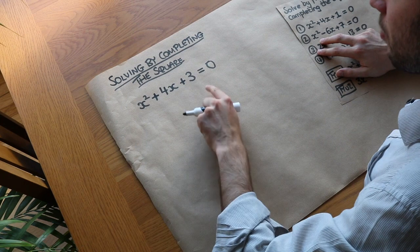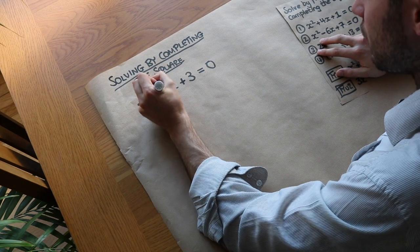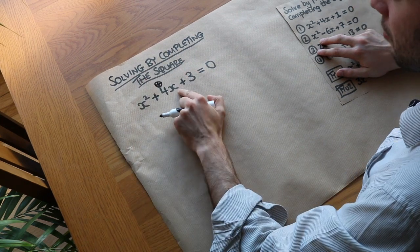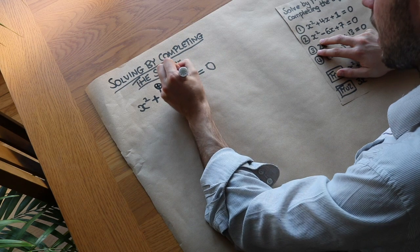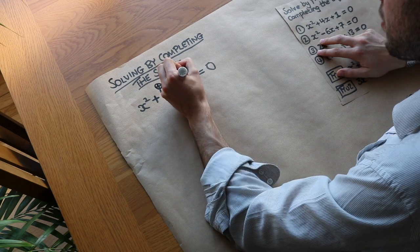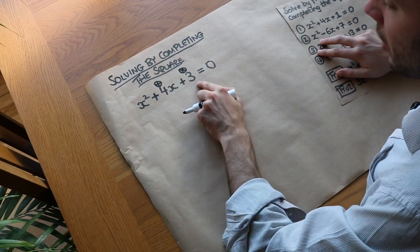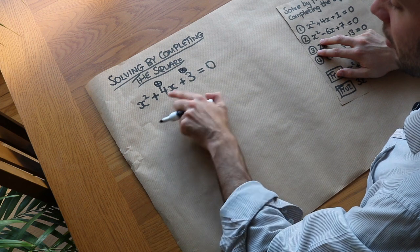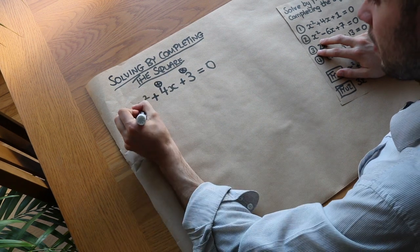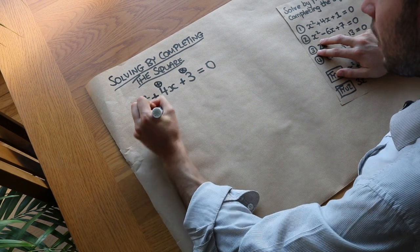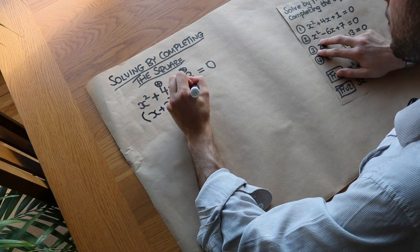So what we do if we were solving by factorization: we'd find two numbers which add to give the coefficient of x and multiply to give 3. So what are those two numbers? Well 3 and 1 multiply to give 3 and they add to give 4. So we get x plus 3, x plus 1 — that would be the factorization.